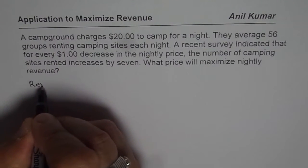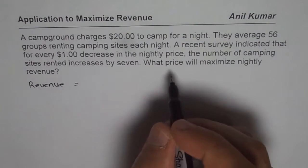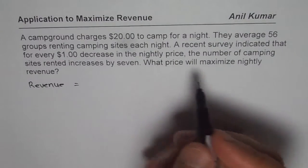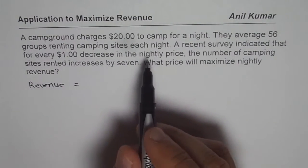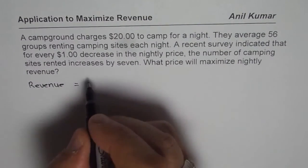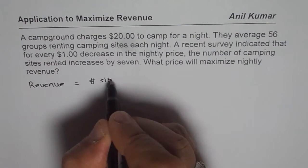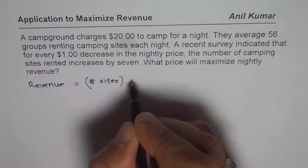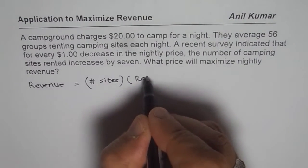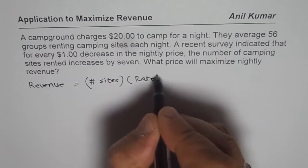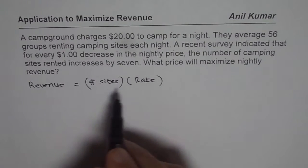What is revenue? Revenue is number of items times rate. So in this case, revenue is number of sites rented times the rate at which they are being rented. It is the product of these two.